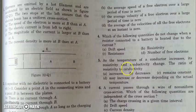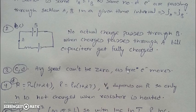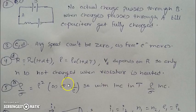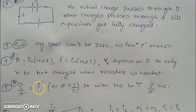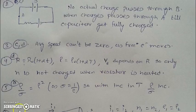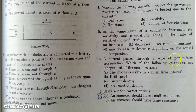When the temperature of a conductor increases, both its resistivity and conductivity change. We need to find how the ratio of resistivity to conductivity changes. Since resistivity (ρ) and conductivity (σ) are inverses of each other, the ratio ρ/σ equals ρ². As temperature increases, ρ increases, so this ratio ρ² will also increase.